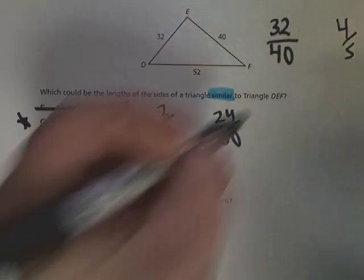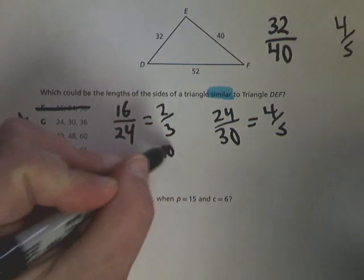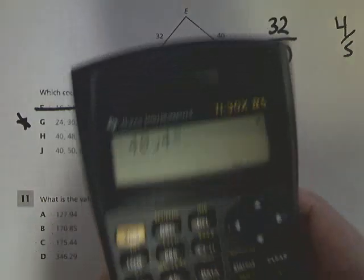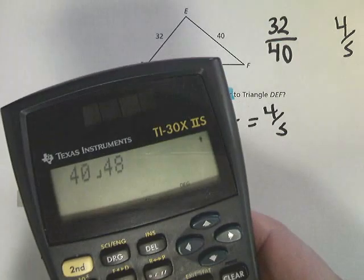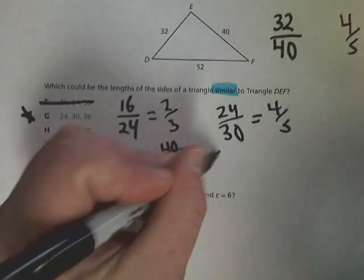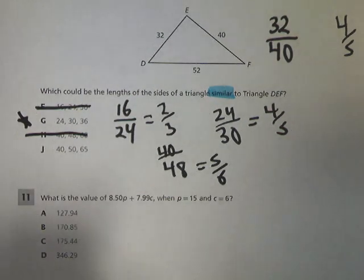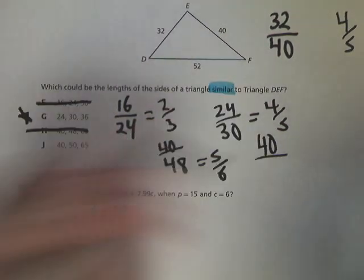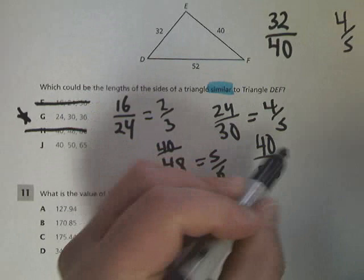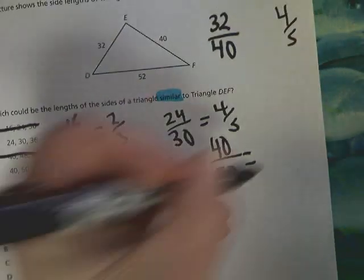Now I'm going to try 40 over 48. And I get 5/6, so that one can't be it. Then I'm going to do J, 40 over 50, and that's going to give me 4/5. So now I'm down to two.